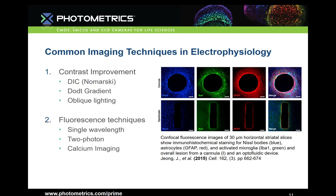Fluorescence techniques are the area of electrophysiology where the most variety can be found. Single wavelength microscopy shines a single wavelength of light at a time to excite specific cell types. Multiple channels can be overlaid on top of each other to show structural features within the cell. Two-photon microscopy uses successive pulses of low-energy photons in order to target cells deeper into the tissue than what would normally be achieved with single wavelength microscopy. Finally, calcium is very important for signal transduction in neurons and is often targeted with fluorescent ligands to visualize its location in and around certain organelles.